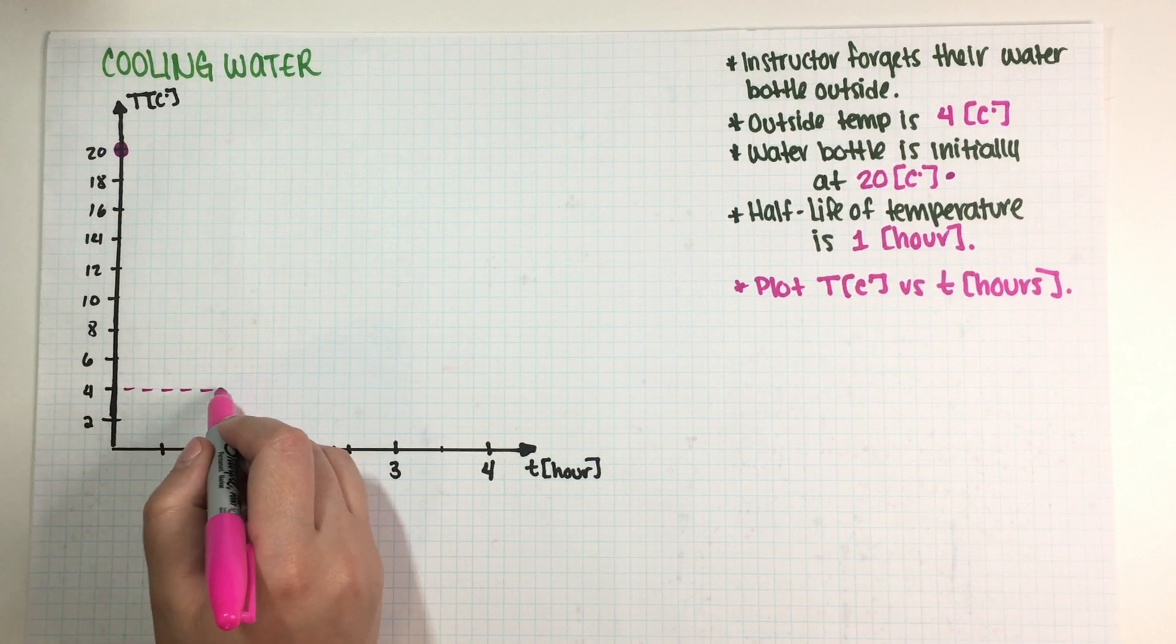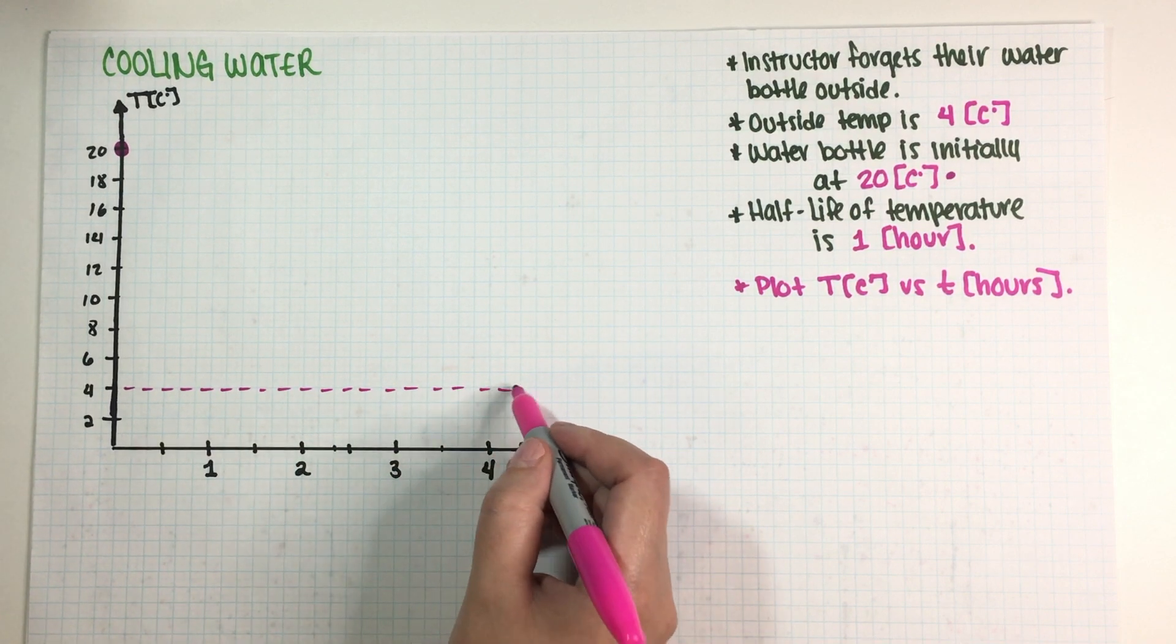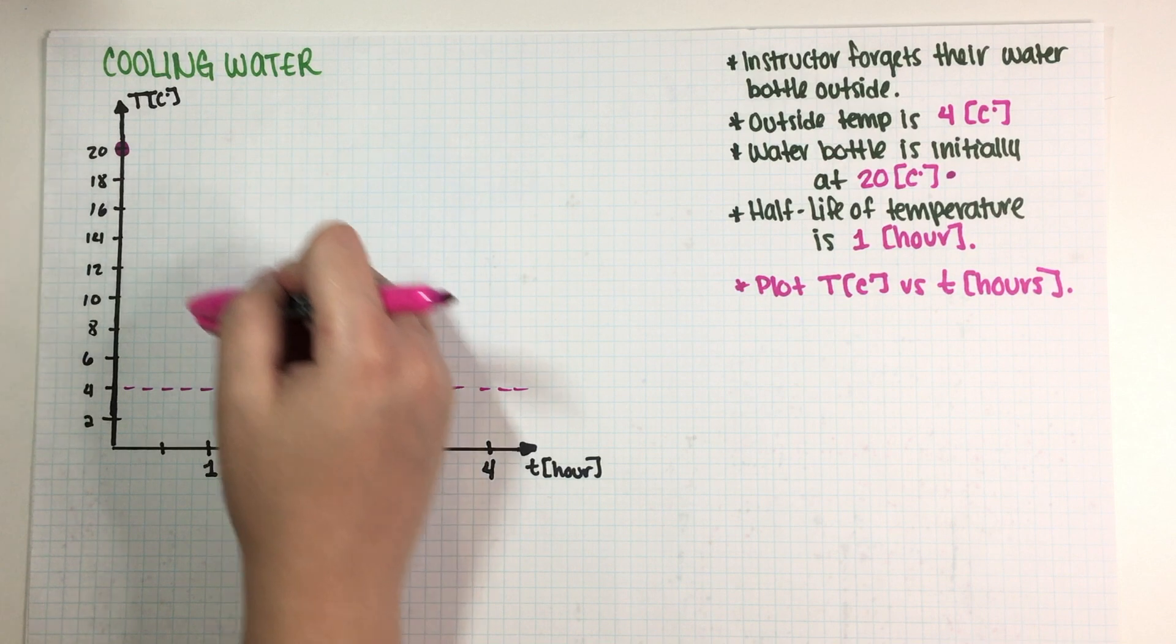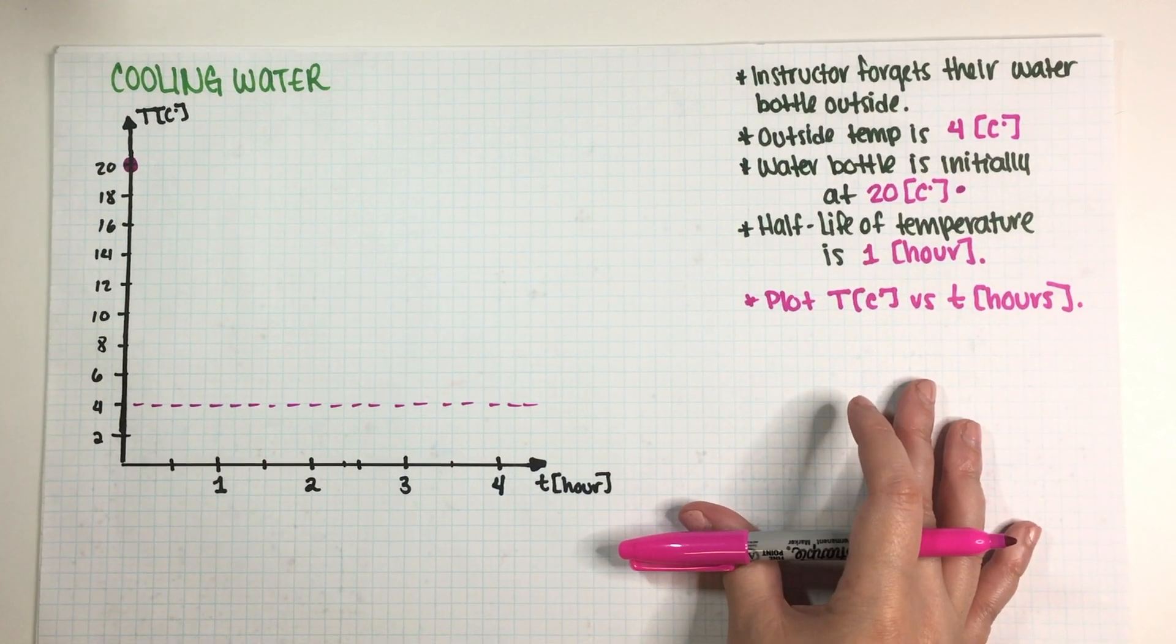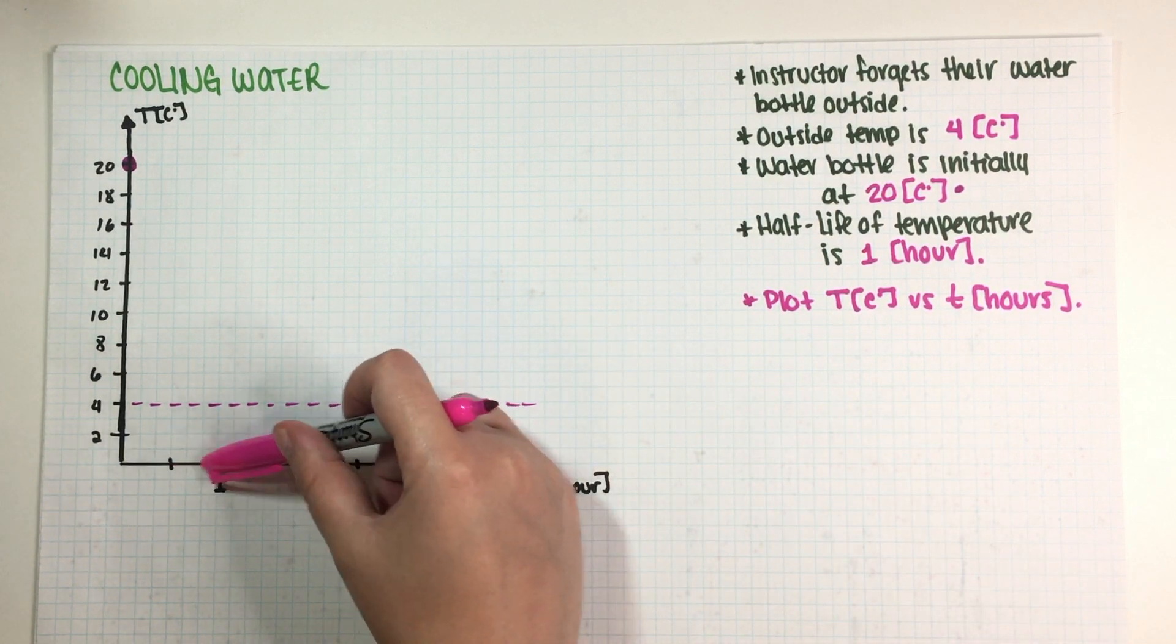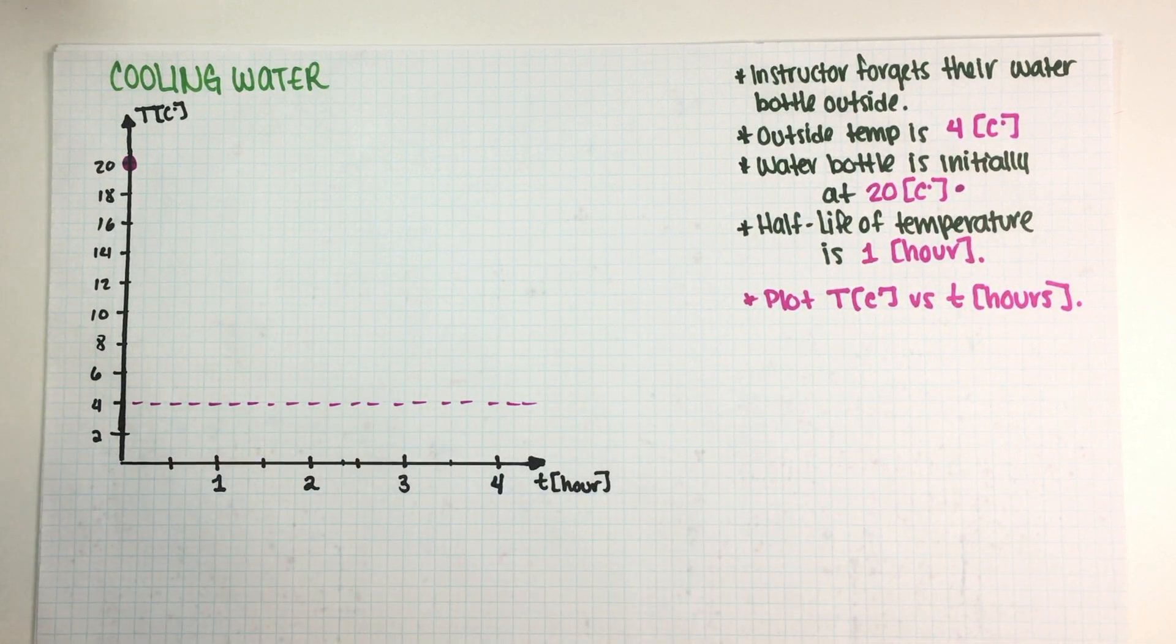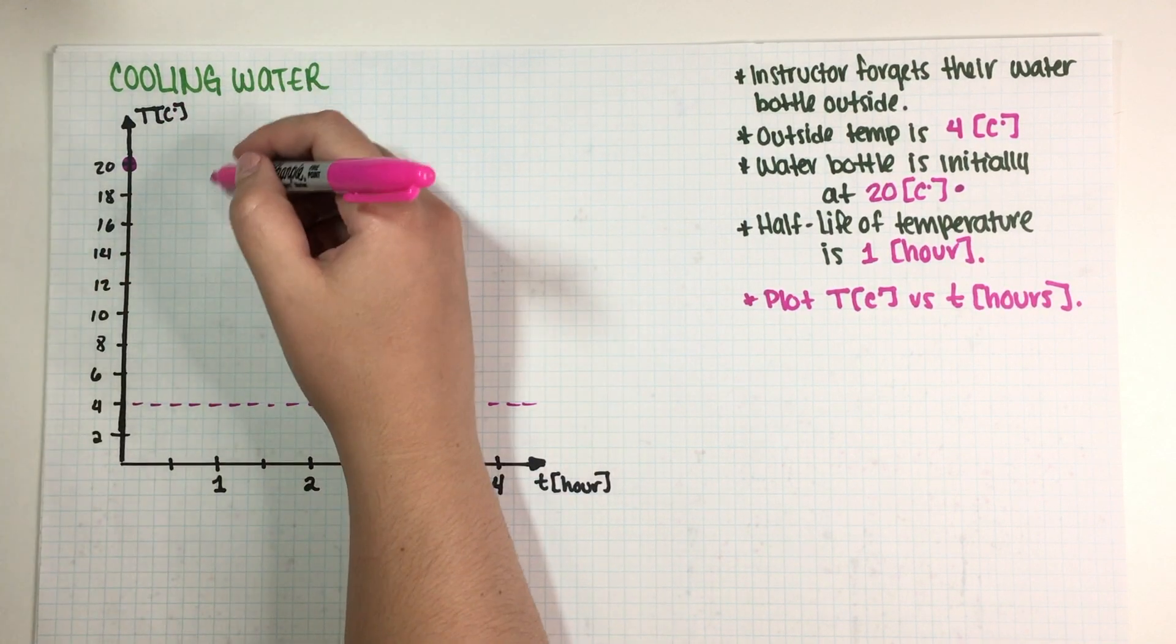So our final temperature is four degrees. So my final asymptote is going to be over here. So I know that my graph is gonna start here and it's gonna go down like this, but I also need to have the right half-life. In this case, they actually asked me for three half-lives, so I do need to be mindful of that.